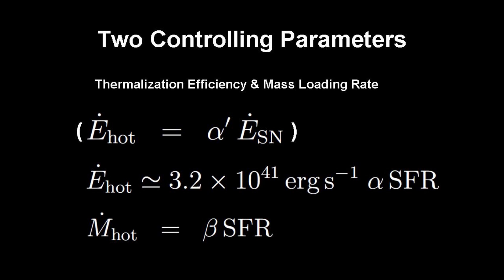In this model, there are two controlling parameters. The thermalization efficiency with which supernovae energy is converted to thermal energy, and the mass loading rate. In this paper, we introduced alpha and beta to denote these two parameters. It's very important to determine these two parameters. However, they are difficult to determine by observations.